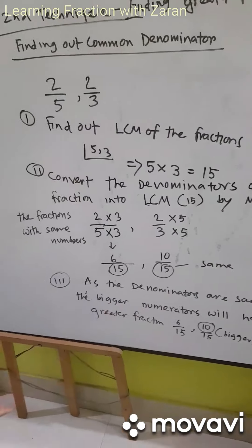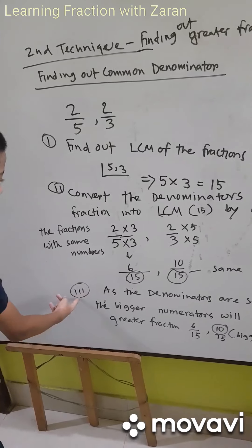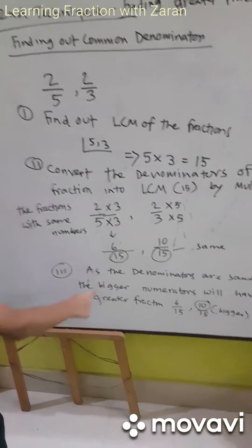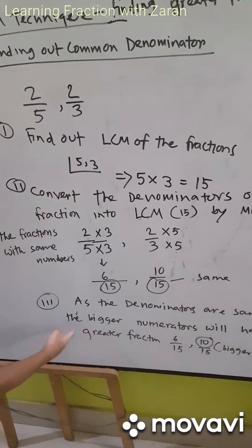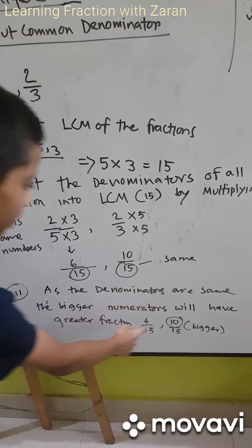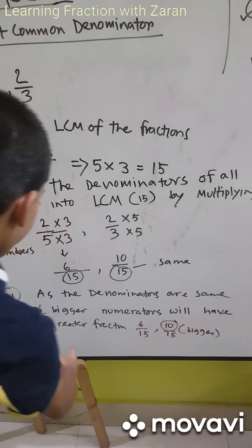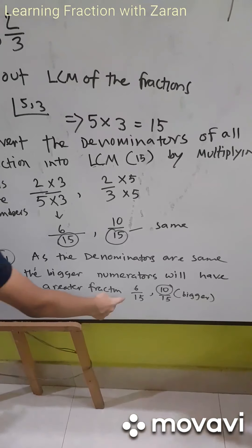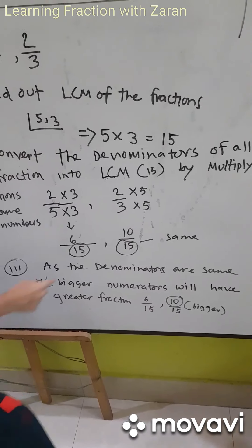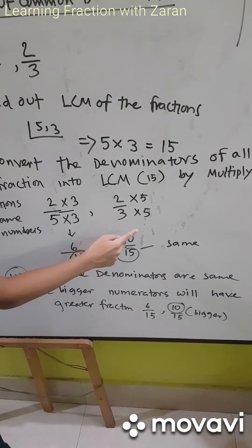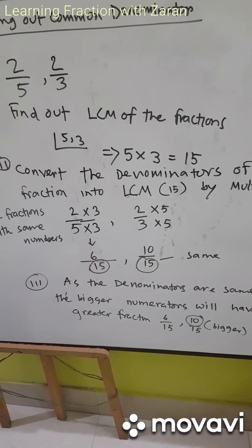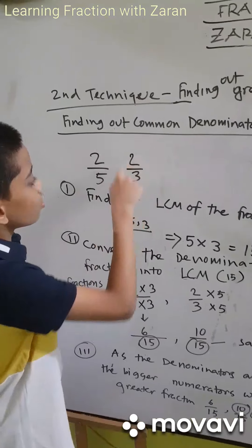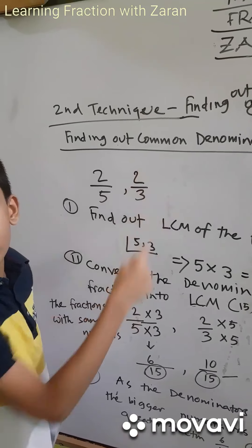So the denominators are now the same: 6 by 15 and 10 by 15. The third step: since the denominators are the same, the bigger numerator will indicate the greater fraction. Since 10 is the bigger numerator, 10 by 15 is the bigger fraction, which means 2 by 3 is greater than 2 by 5.